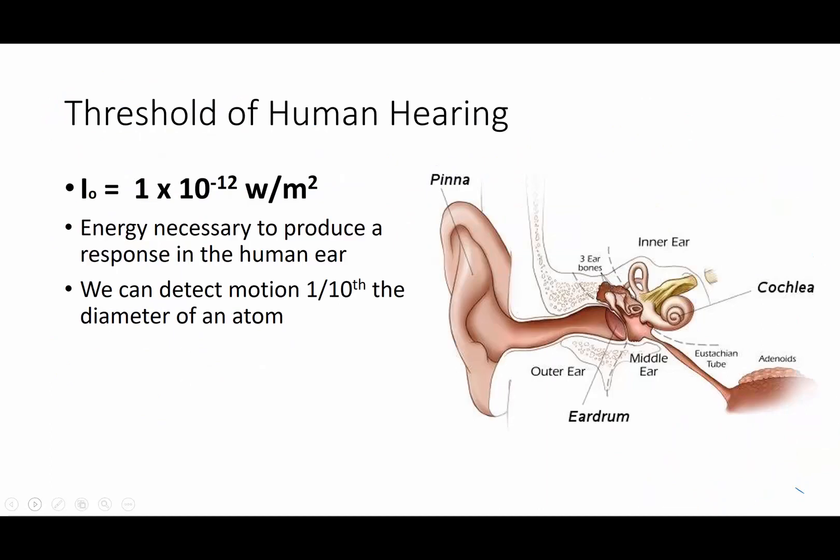Now, human hearing, the threshold of human hearing is this value. Please write this number down. You're going to need this. I suggest you put it on either your orange sheet or your formula sheet, one of the sheets you're going to need to use on tests and homework. And this is the threshold of human hearing. This is the minimum energy necessary to produce a response in the human ear. And this is based on a lot of experimentation that has been done on human ears. It takes that much power to begin the process of hearing to move this tiny little membrane that is the eardrum. That is an incredibly small amount of power. What it means is that our ears are so sensitive, we can detect the motion of an air molecule down to one-tenth the diameter of an atom. Phenomenally sensitive, your ears are. Just absolutely amazing.